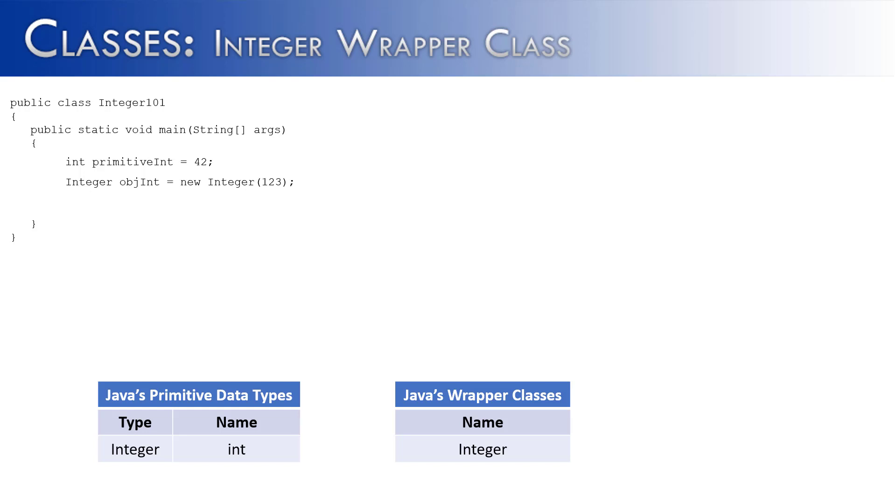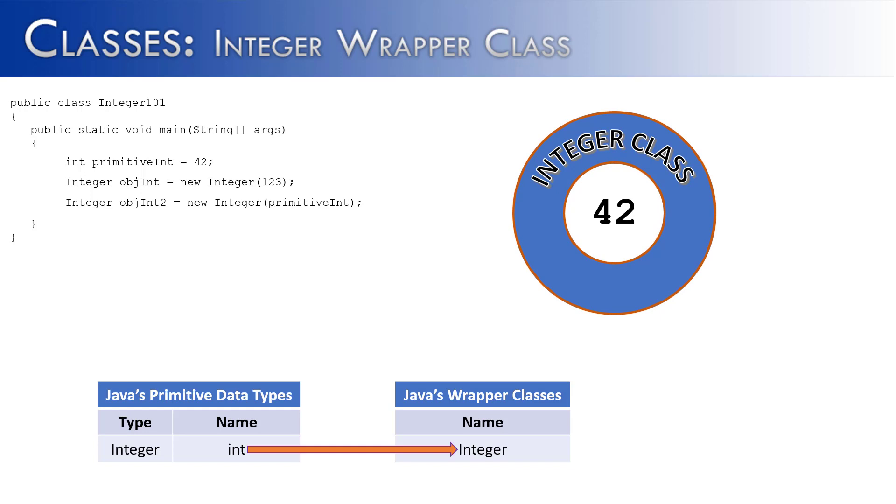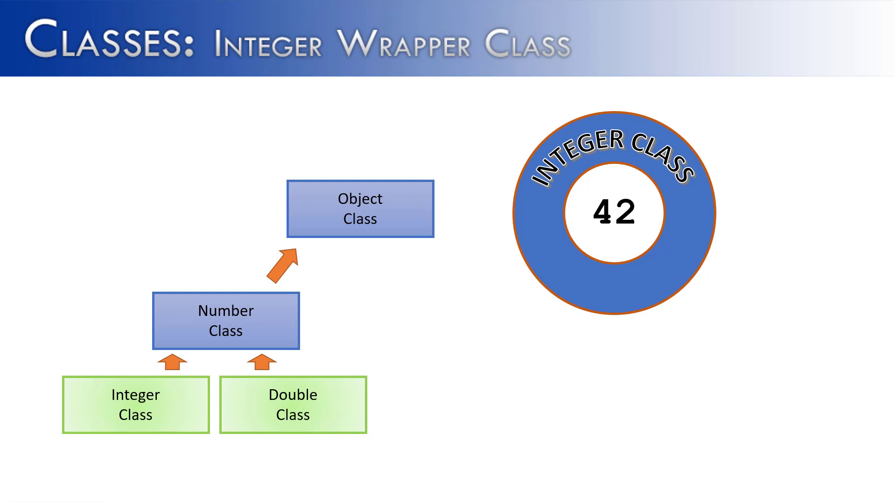Now there's a couple ways you can make this conversion between a primitive and a wrapper. If we wanted to take the primitive that we first created, 42, and wrap it with the integer object, we could write: Integer object2 equals new Integer(primitiveInt), passing it to the constructor. That is going to make the conversion between a primitive data type into its wrapper class Integer. Visually, it would look like there's our primitive 42, and coming up behind it is the integer class wrapping around it. Now that the integer class has been wrapped, let's see what this entitles us to.